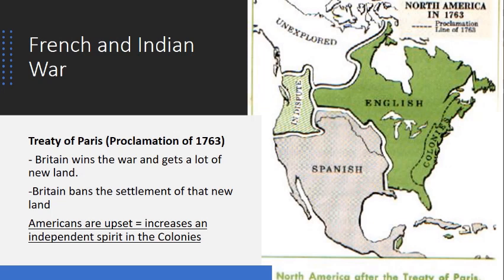To make matters worse, when the war ended, the British won — which was a good thing. The map now looks very different: all we see is English and Spanish, with very little French territory remaining. The English took over a great deal of French land and controlled almost all of North America. However, the king made the Proclamation of 1763, stating that American colonists could not go past the Appalachian Mountains. All that new land they fought and sacrificed for — they couldn't touch it. The Americans felt this was unjust and that it took away their rights, driving a wedge between the colonists and the British Empire and increasing their independent spirit.